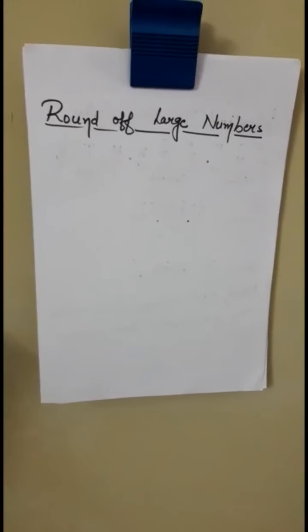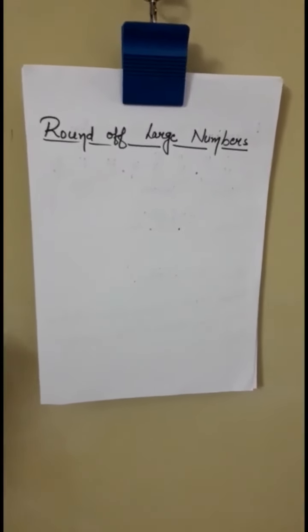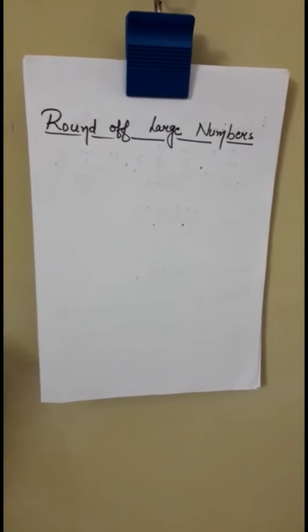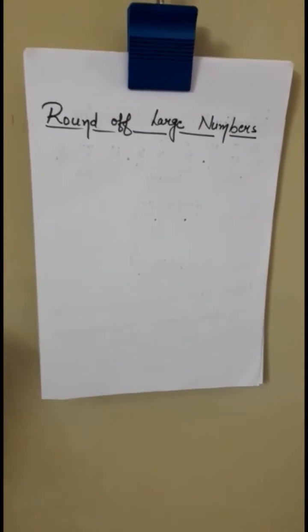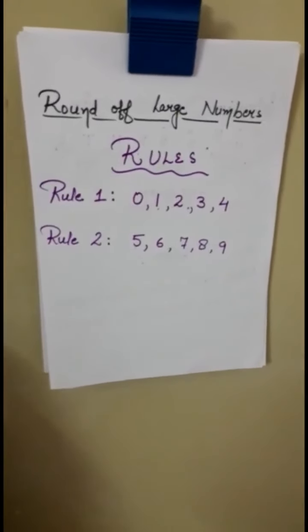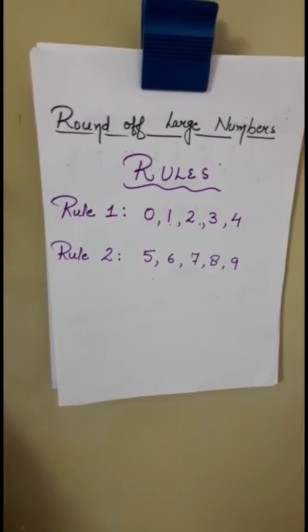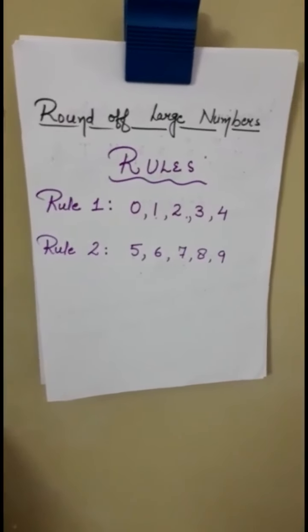When a number has become so large that we are not able to go for it, we give its approximate value. Approximate value means its nearby value. So rounding off karna is very easy. Isme kuch bhi difficult nahi hai. Sabse interesting aur easy topic hai ye poore chapter ka.